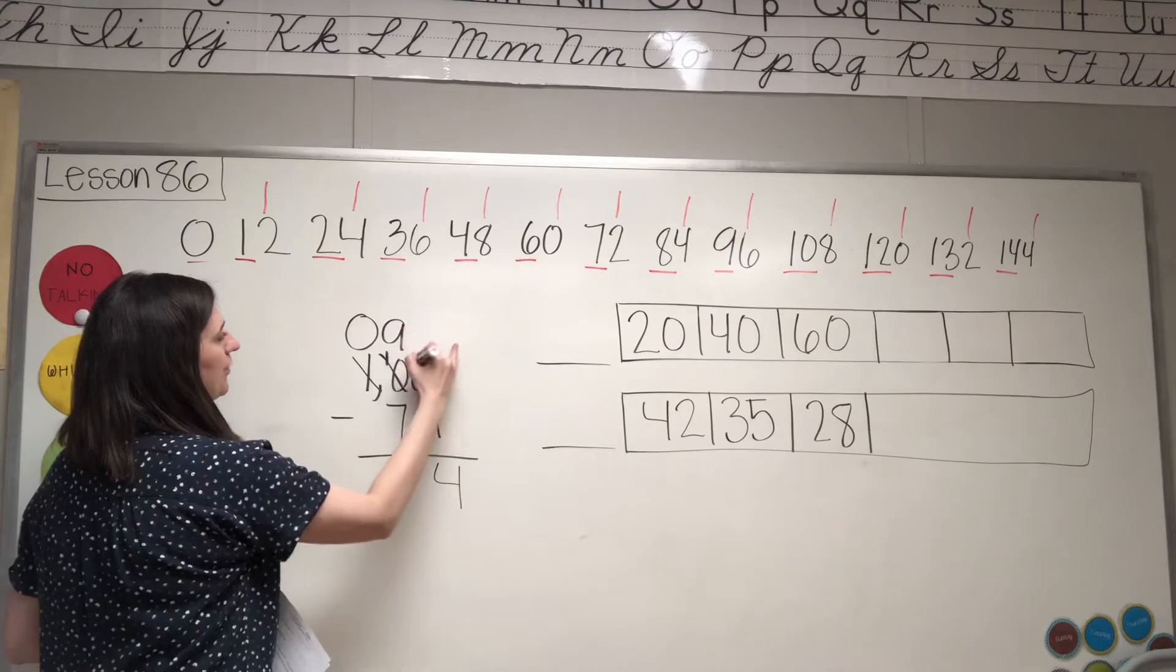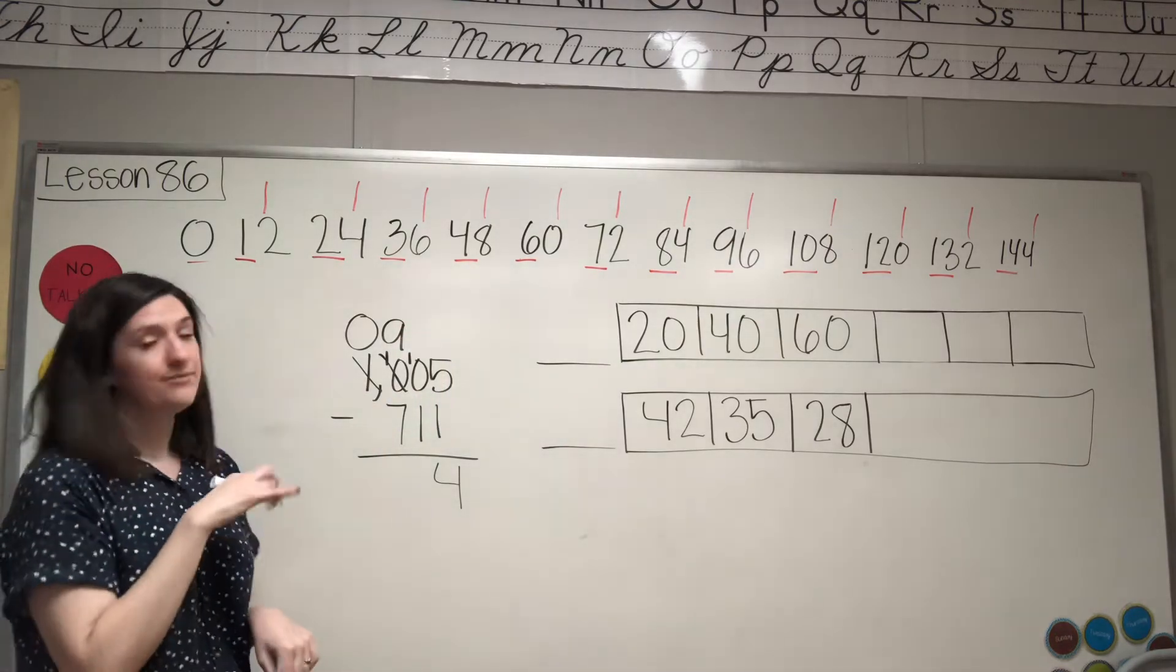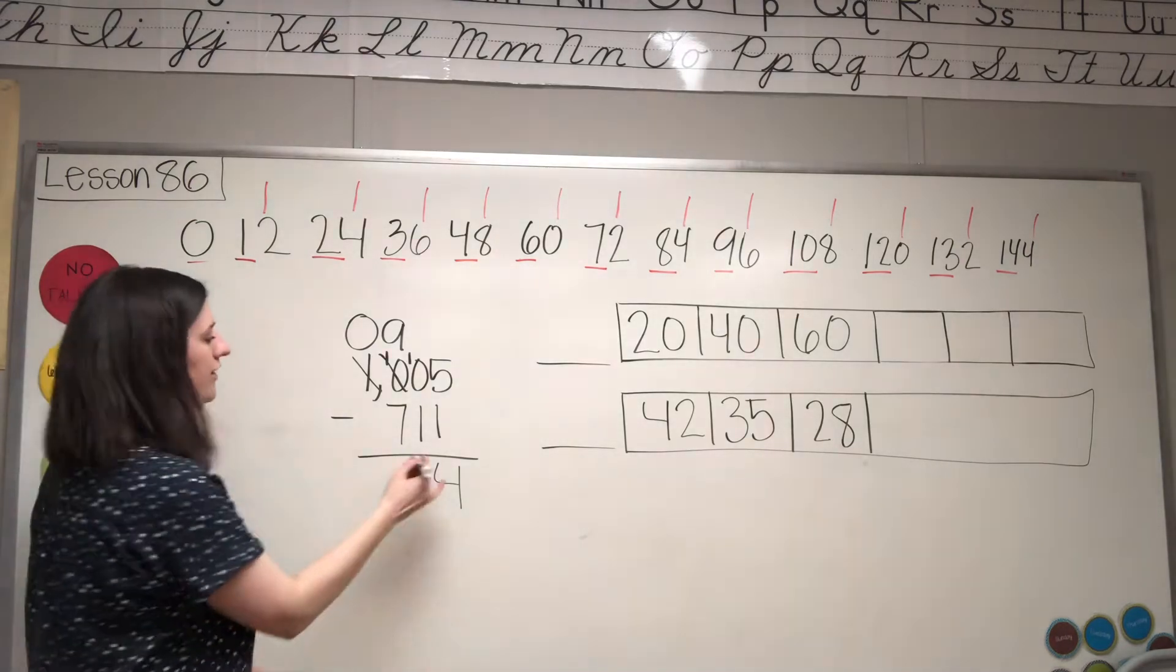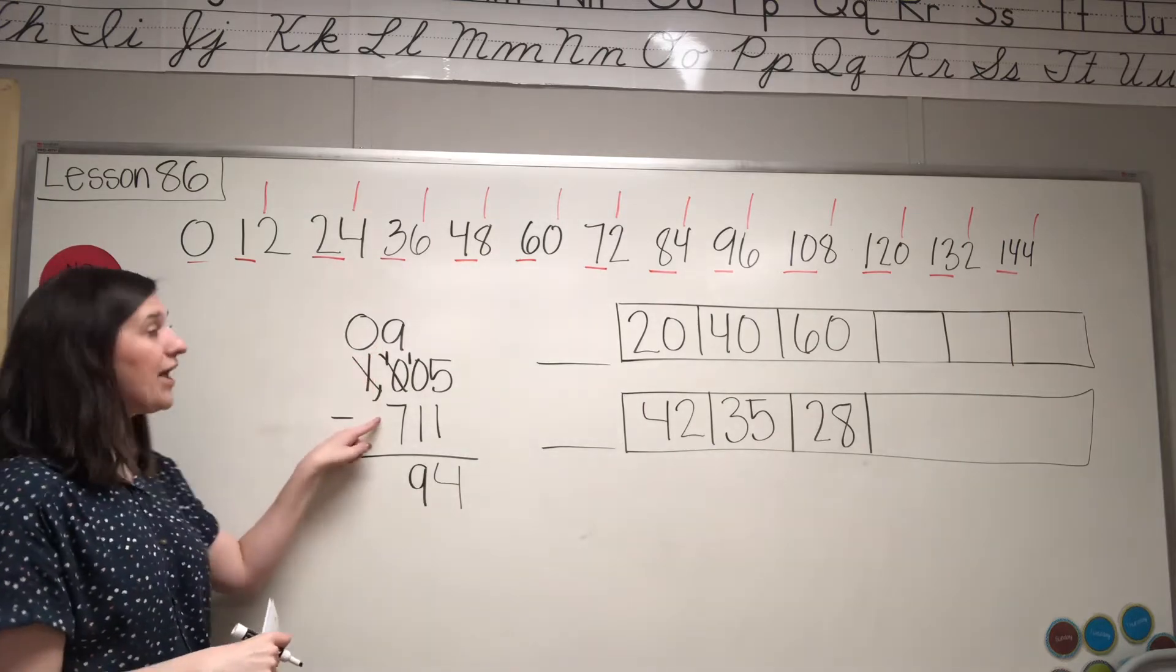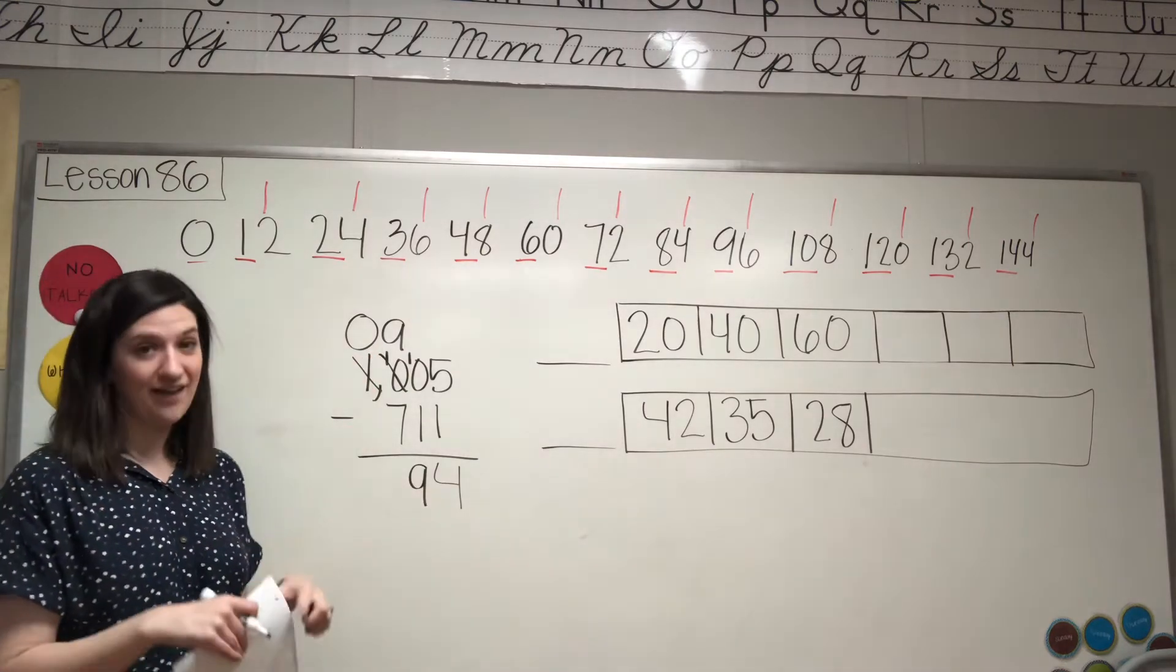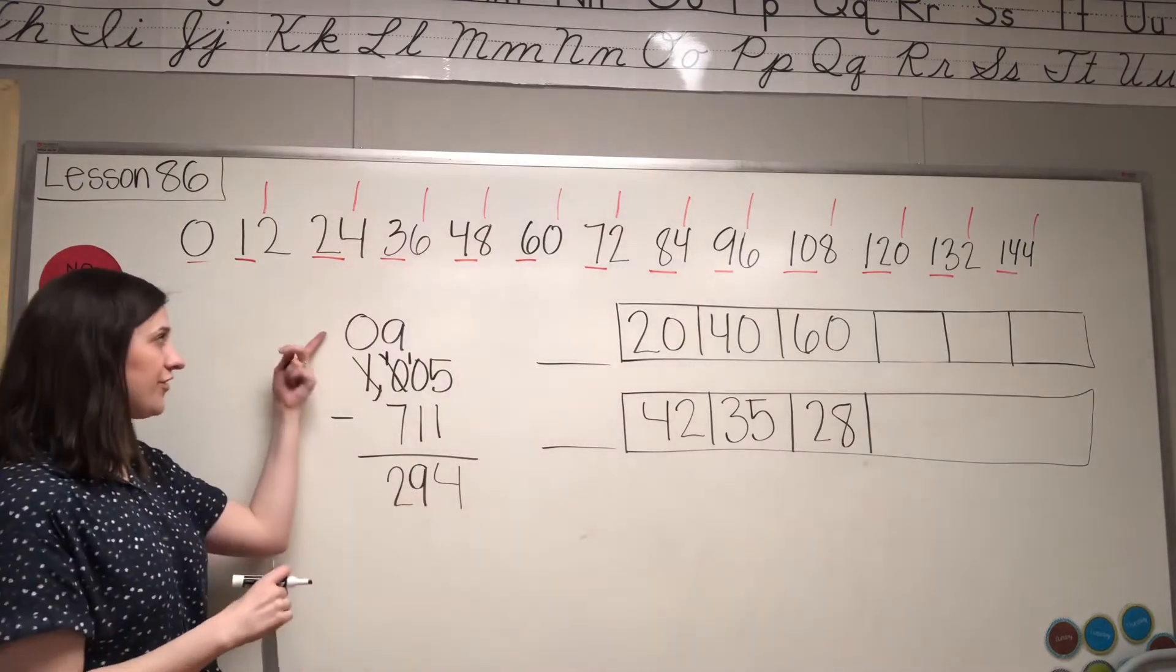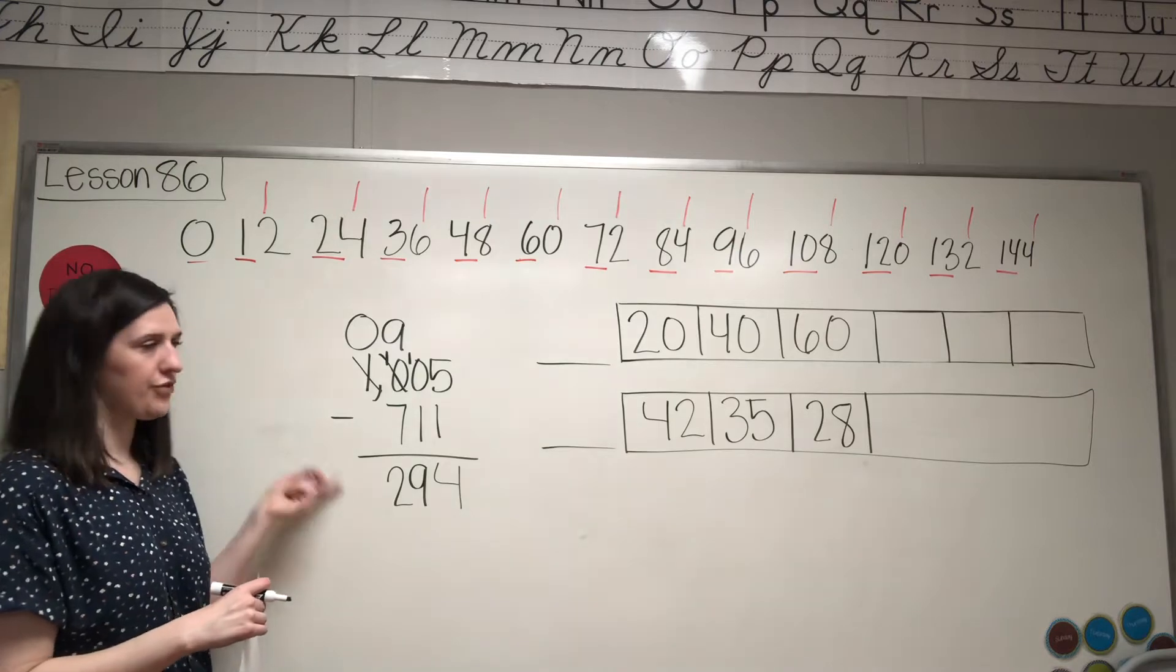Leave it as a 9, put a 1 in front of the 0 so it becomes 10. That does help us. 10 minus 1 is 9. 9 is the big number on top, yes. Subtract 9, 2. This is a 0, we don't write zeros down here in front of the number, so we're gonna leave that up there. The answer is 294.